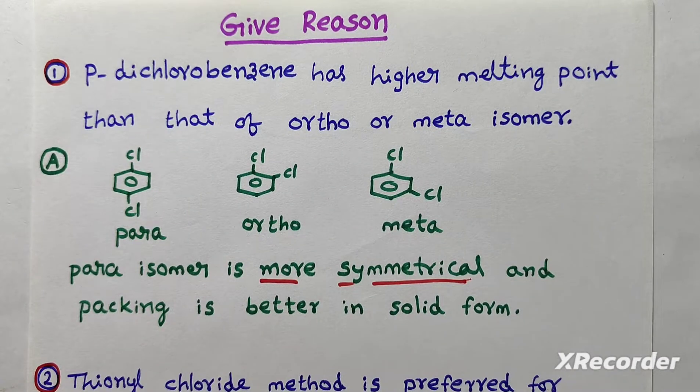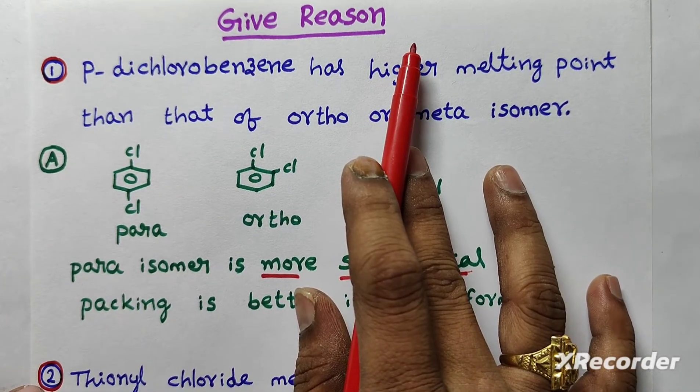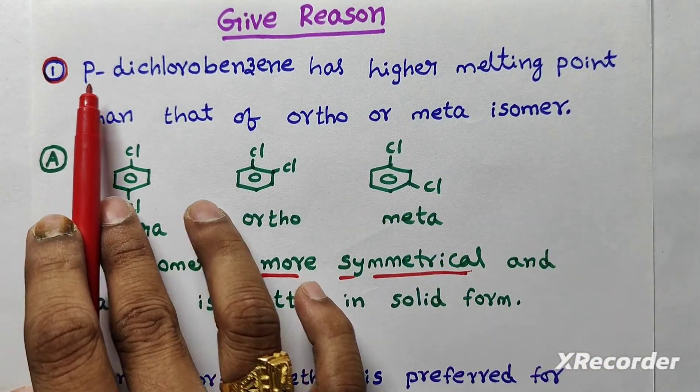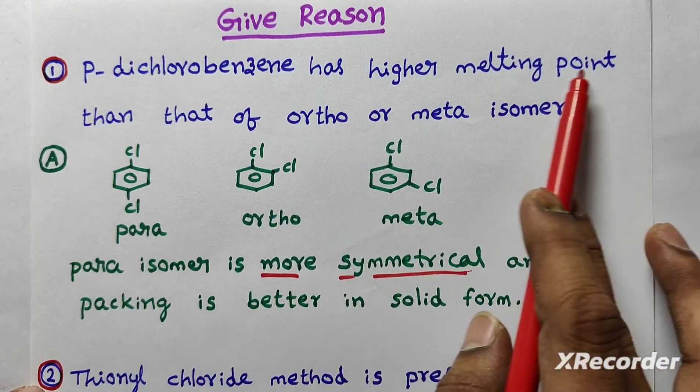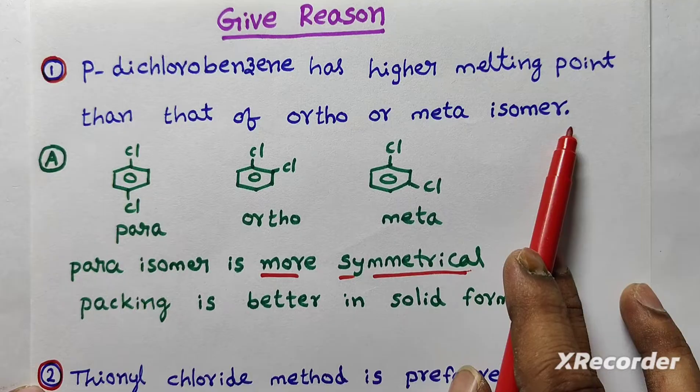Hello students, welcome to ESN chemistry. Today I am going to discuss give reason questions from haloalkanes and haloarenes chapter. First question, para-dichlorobenzene has higher melting point than that of ortho and meta isomer. Give reason.